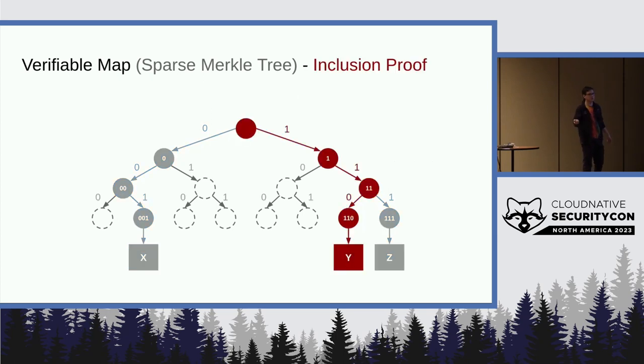And just like in the same one, we can do an inclusion proof. We can check that 110 was mapped to Y in this root. We can verify that in logarithmic hashes by simply reconstructing the root using those same hashes that we were using before to construct the root originally.